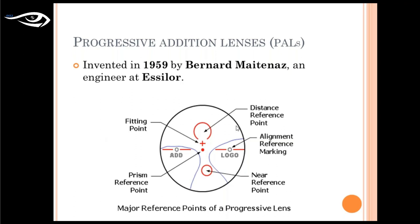In a progressive lens, power increases continuously from distance to near through a change of curvature — power is obtained by continuously changing curvature from one or both surfaces. Comparing with single vision lenses, which correct for only one distance, or bifocals, which correct for distance and near only, a progressive lens provides correction across all distances: distance, intermediate, and near. That is the biggest advantage of progressive lenses.